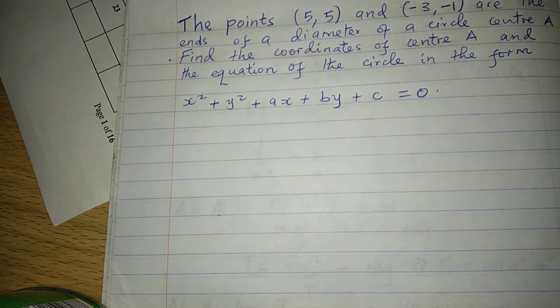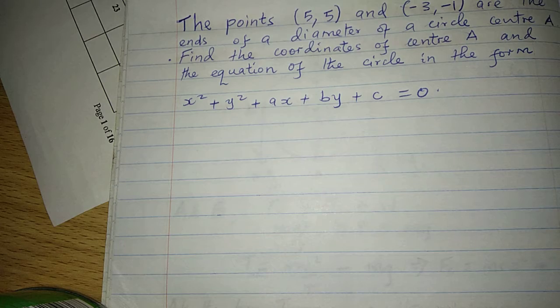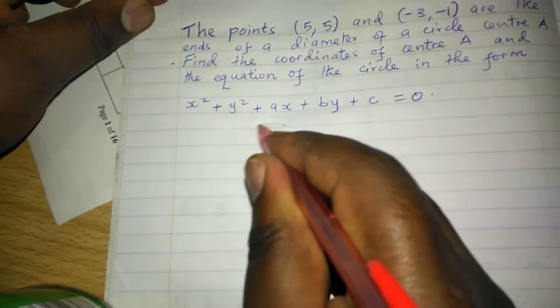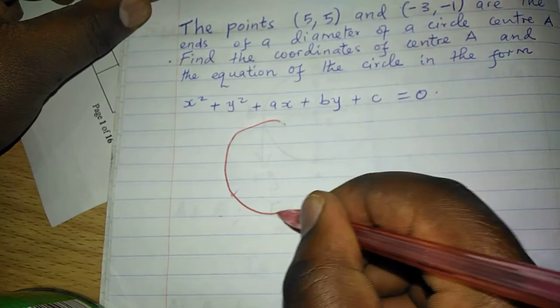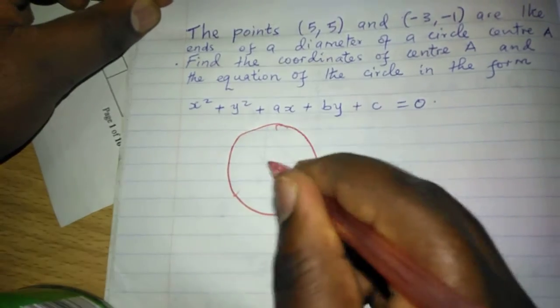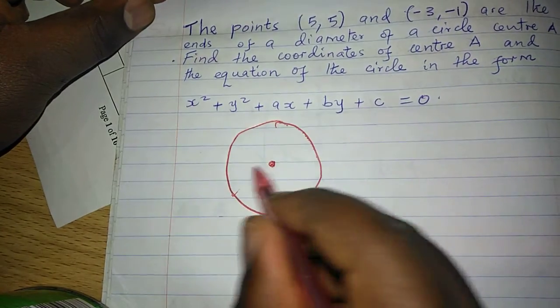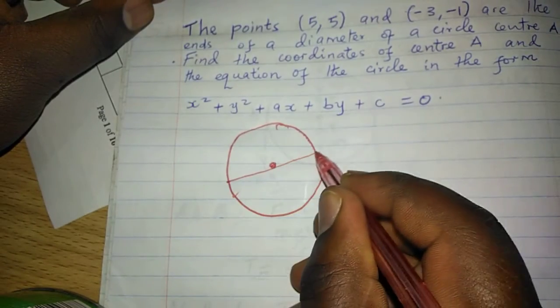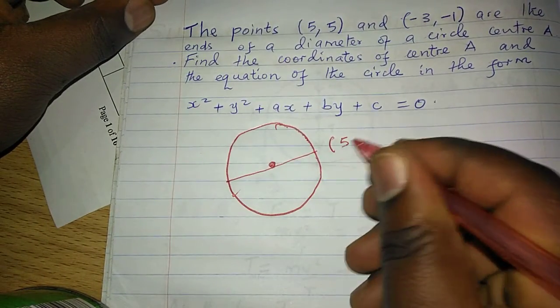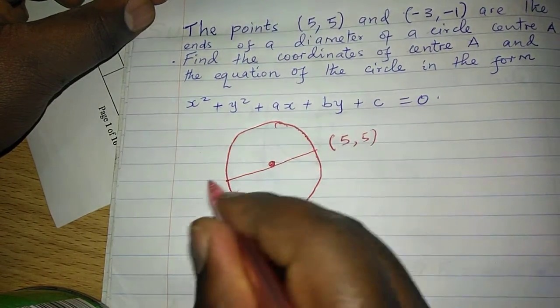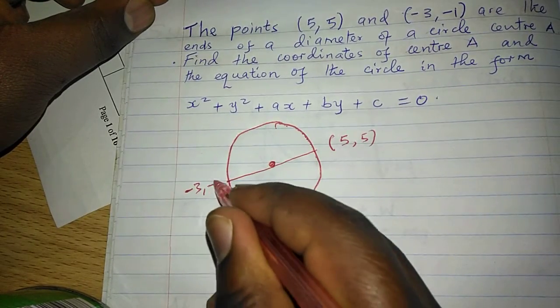Therefore, to solve this one, we can first of all draw the circle having center A such that there is a diameter passing here whose coordinates are (5, 5) and on the other side (-3, -1).